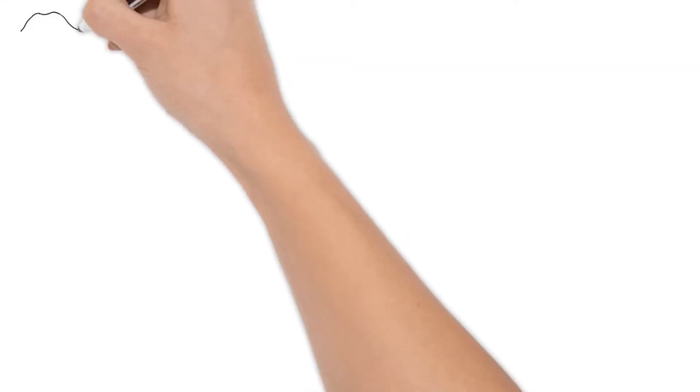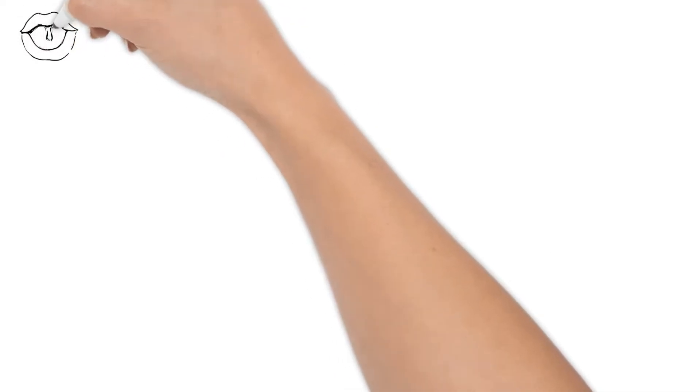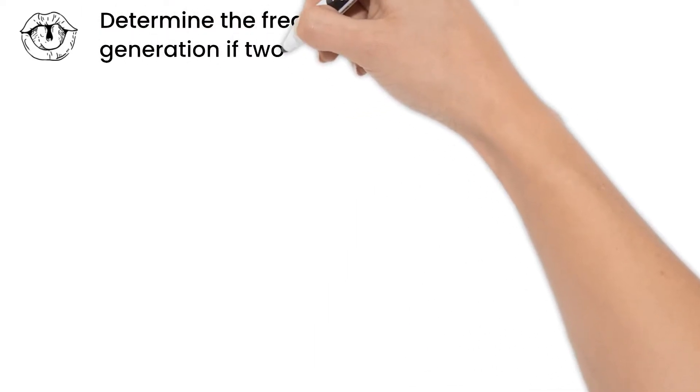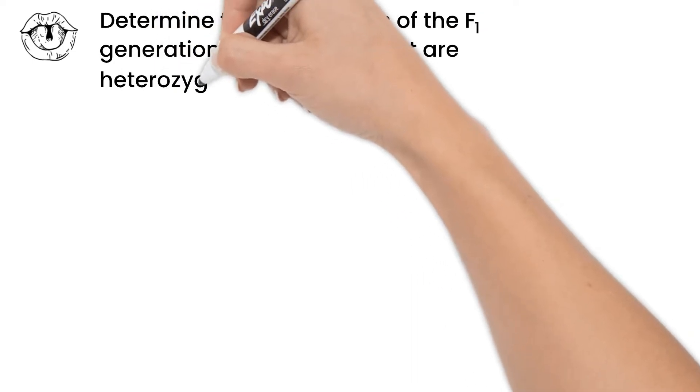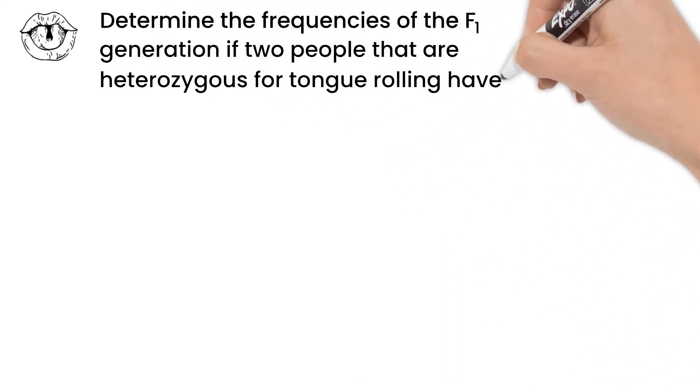We'll use our tongue rolling example for our first monohybrid cross. We need to determine the frequencies of the F1 generation if two people that are heterozygous for tongue rolling have children.